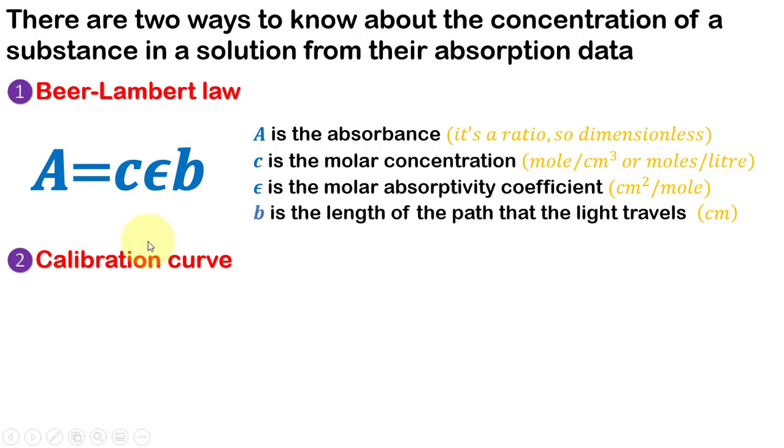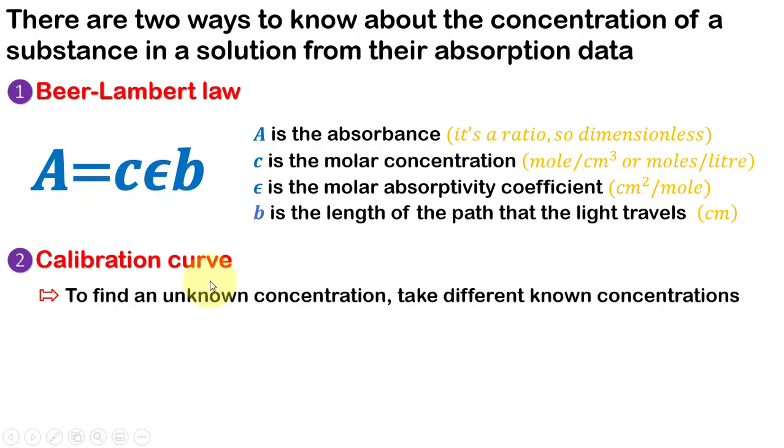The second method is the calibration curve which is also principally based on Beer-Lambert's law. To find an unknown concentration, we will take some different known concentrations.